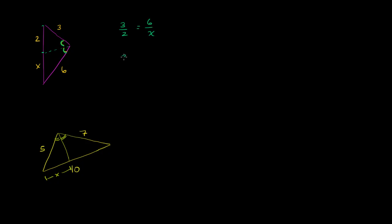If you cross multiply, you get 3x. 3x is equal to 2 times 6 is 12. x is equal to, divide both sides by 3, x is equal to 4. So in this case, x is equal to 4.